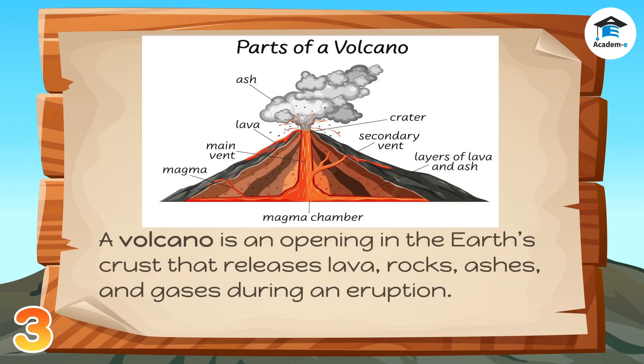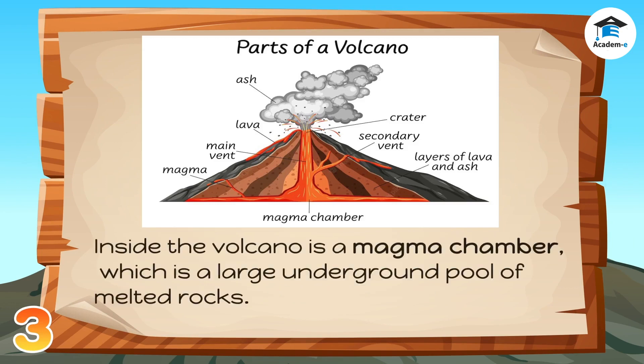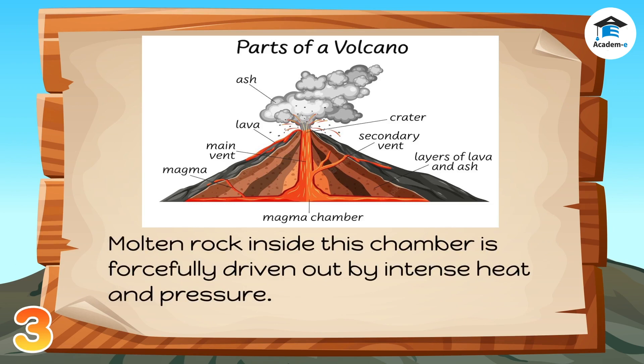A volcano is an opening in the Earth's crust that releases lava, rocks, ashes, and gases during an eruption. Inside the volcano is a magma chamber, which is a large underground pool of melted rocks. Molten rock inside this chamber is forcefully driven out by intense heat and pressure.